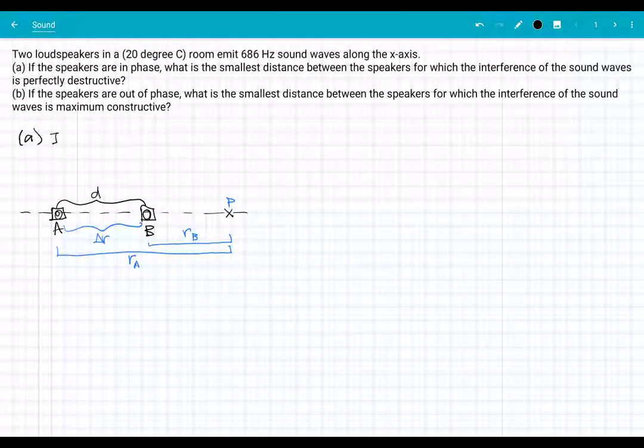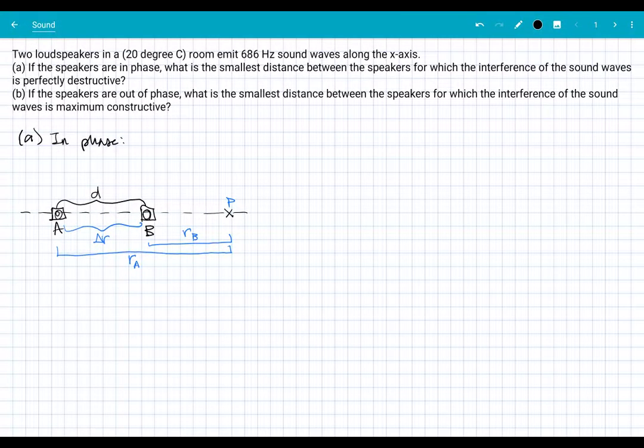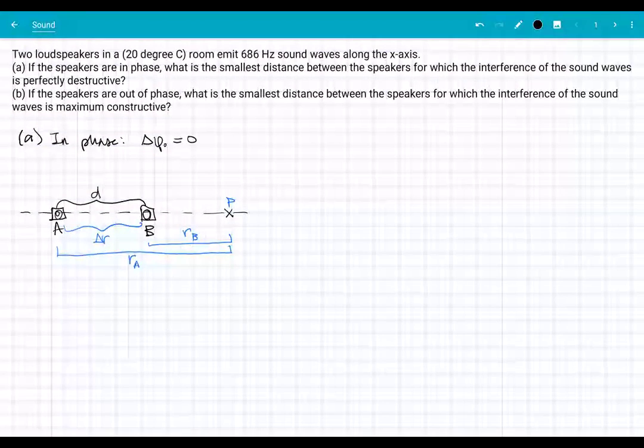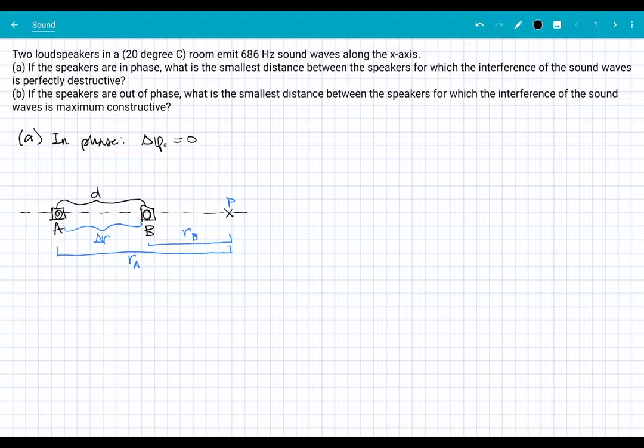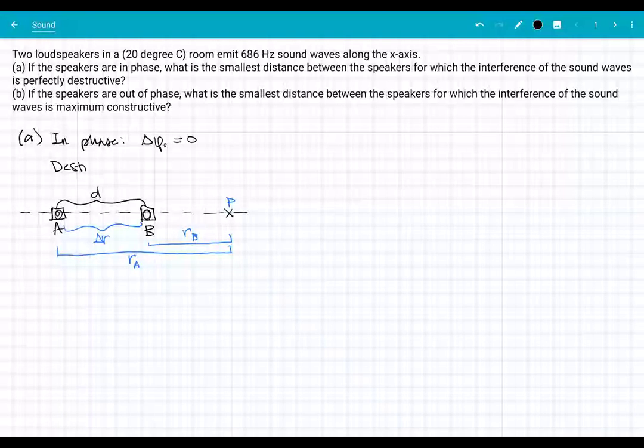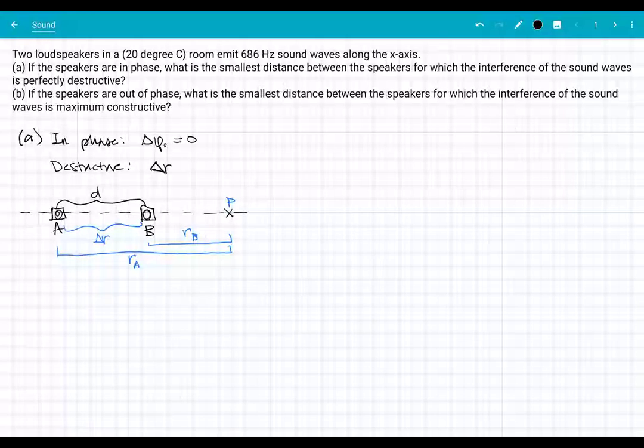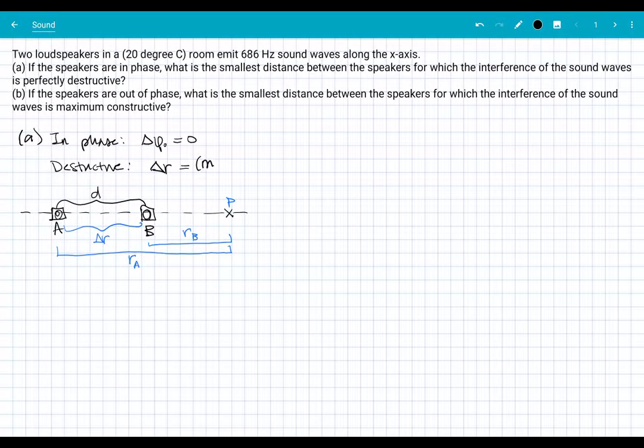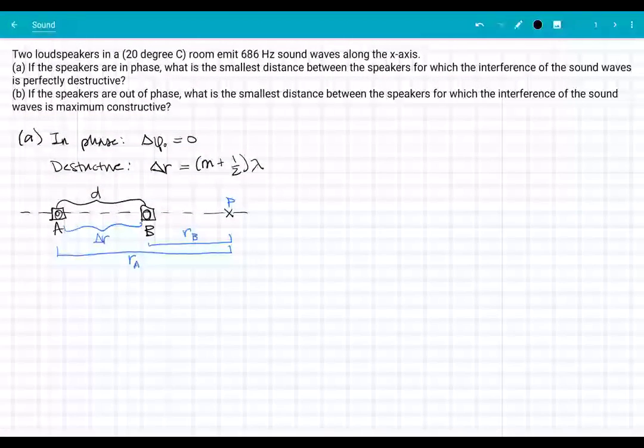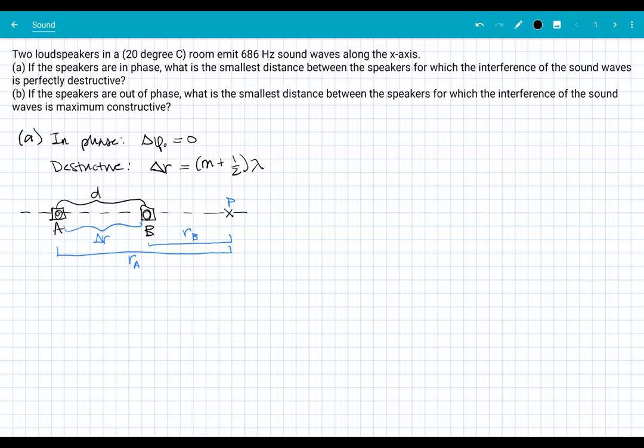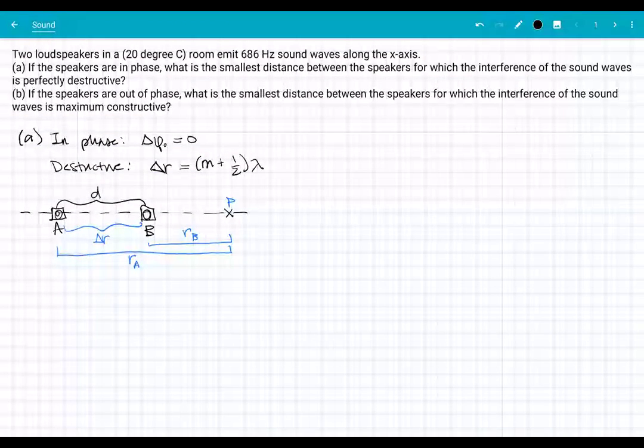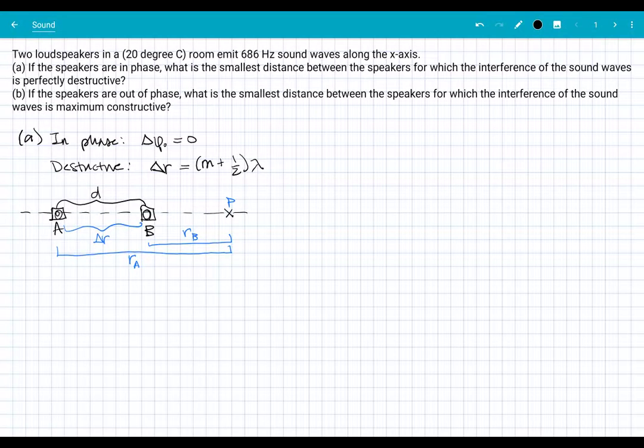We're in phase. What in phase tells us is that the initial phase difference is equal to zero. This is a destructive case that we're looking at. Our destructive constraint is that the path length difference is equal to an odd multiple of one half wavelength. If that's not clear, I'd pause this video and go back and look at the basic constraints for constructive and destructive interference.